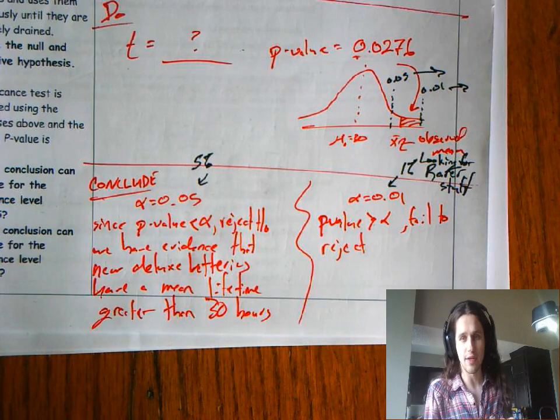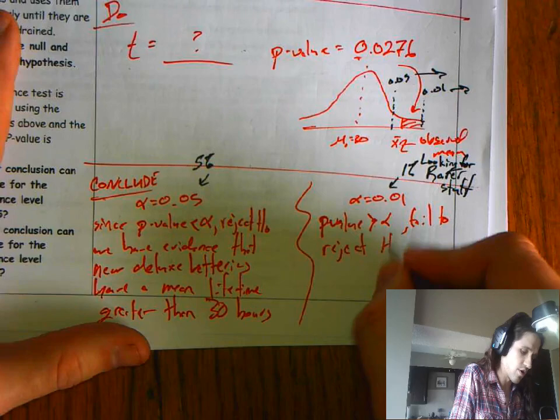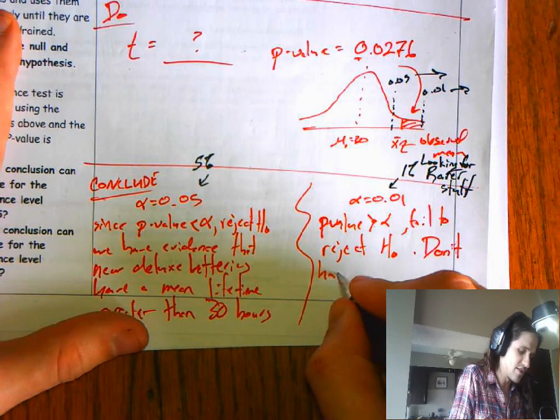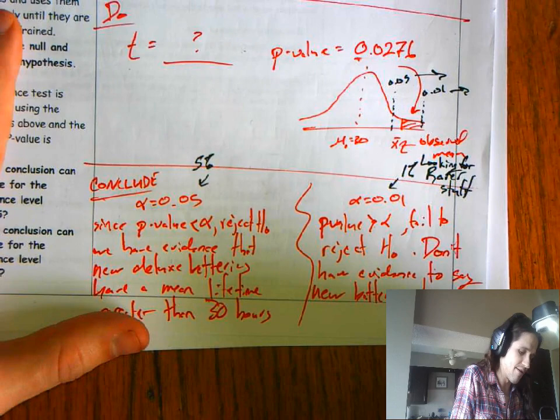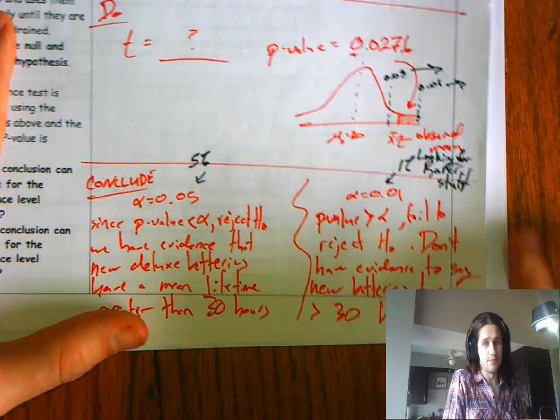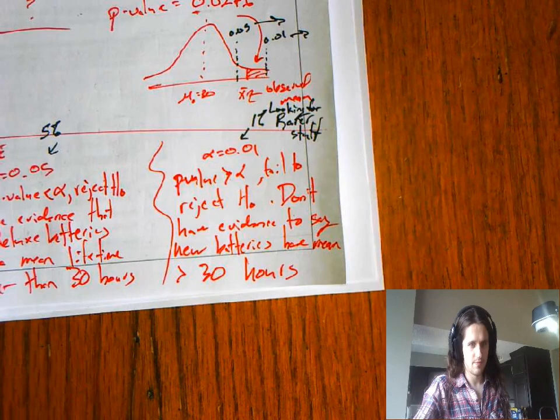We don't produce them. But if mu is greater than 30, we're going to produce them. And we need evidence to show that. We're talking about setting some industrial factory into motion, producing a new product. And that's not nothing. That takes some effort. And they'd like to do it, only if it's worth it. Over here, p-value is greater than alpha. We fail to reject the null hypothesis.